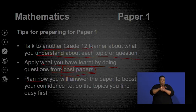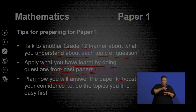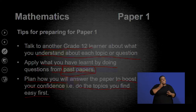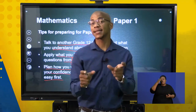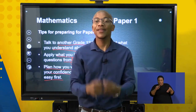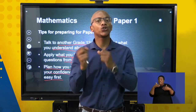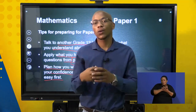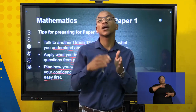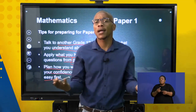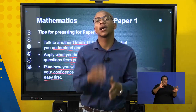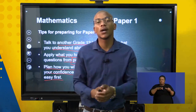You also need to plan how you are going to answer the question paper in order to boost your confidence. You can start with the topics you find easy. During the 10-minute reading time, go through the whole question paper, look at questions you find easy, and start with those. Then go to questions you are not so sure about, and end with questions you find difficult. This ensures your three hours is used wisely — by the time you get to difficult questions, you may have about an hour left because you sailed through the easy ones.